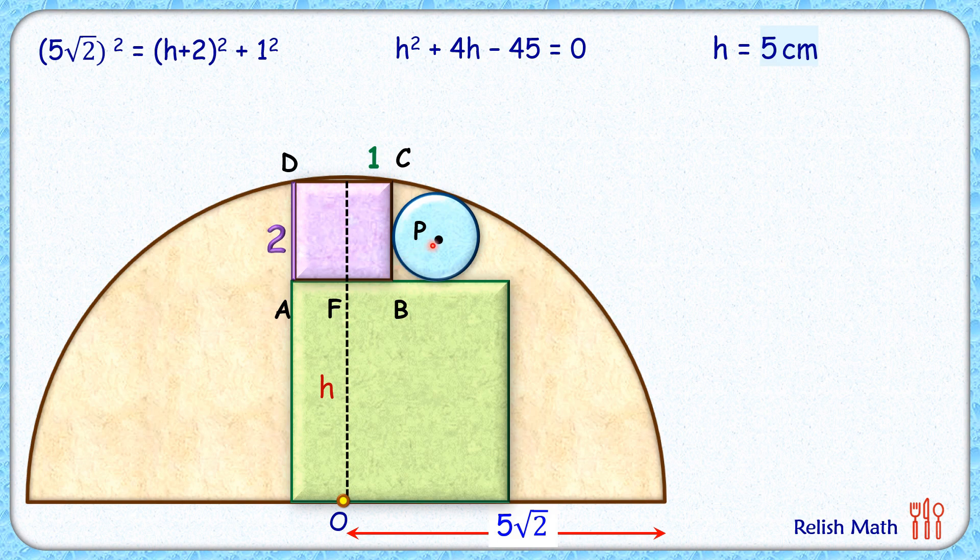Now to get the value of small r, that's the radius of this blue circle, we have to form one more equation which is slightly tricky to form, but it becomes easier once we know we have to use the fact that when two circles are touching each other, their centers and point of contact lie in a straight line.